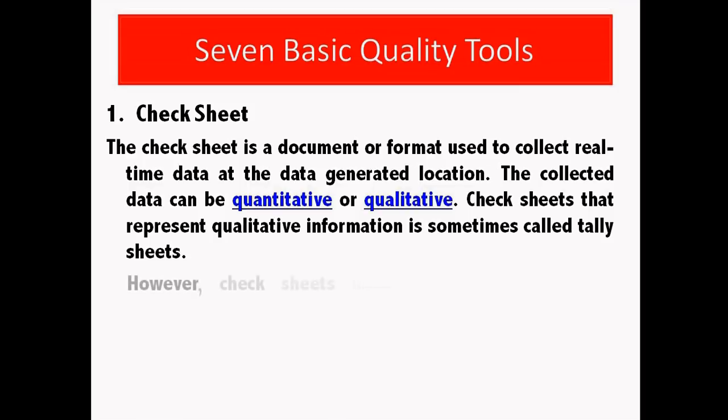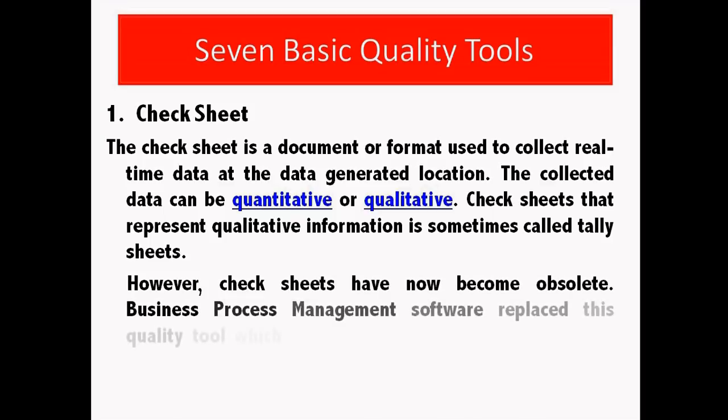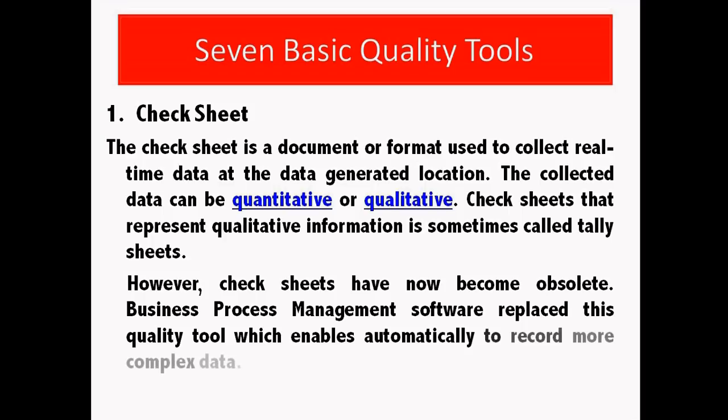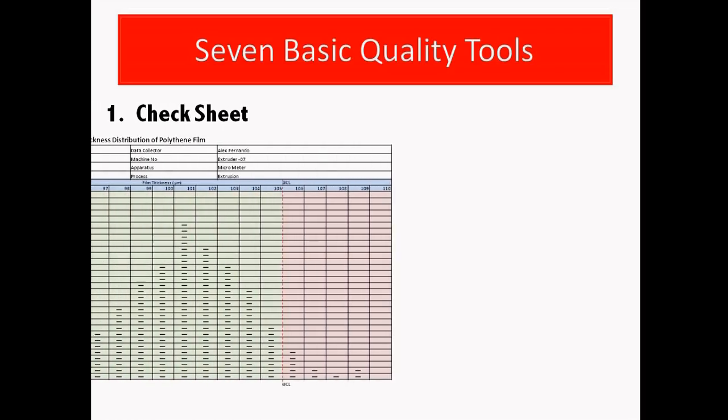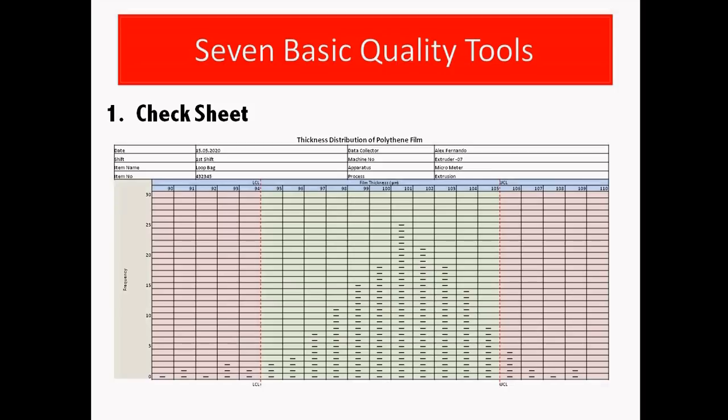However, check sheets have now become obsolete. Business process management software replaced this quality tool which enables automatically to record more complex data. Now you can see a check sheet that is used to check extruded polythene film thickness. Also, you can see this is a quantitative data check sheet.